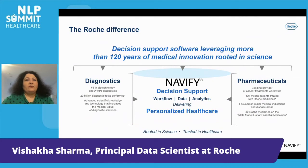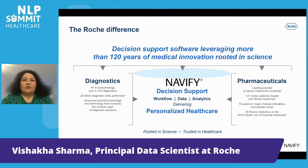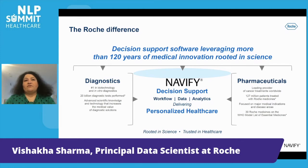Roche is a 120-year-old company with headquarters in Basel, Switzerland. It has two main business divisions: diagnostics and pharmaceuticals. It is number one in in-vitro diagnostics and a leading provider of cancer treatment worldwide.